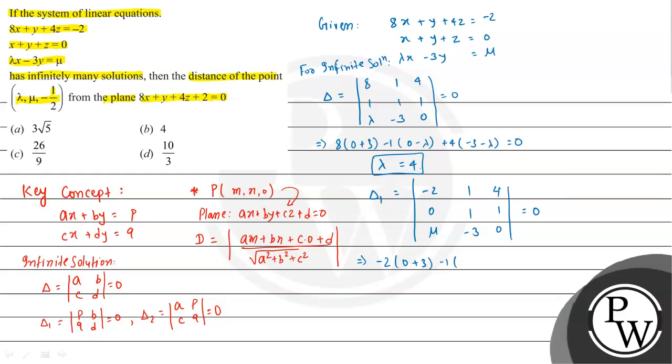Expanding: minus 2 times (0 minus mu) plus 4 times (0 minus mu) equal to 0. Solving gives mu equals minus 2.